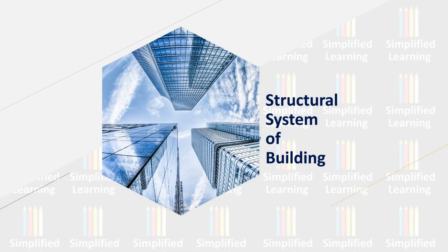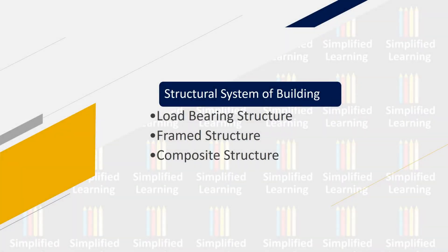If you want to define a building structurally, there are three ways. Either the building can be a load bearing structure, a frame structure, or a combination of both — that is, a load bearing structure as well as a frame structure. Load bearing system is a thing of the past, frame structure is the present and the future, and composite structure makes use of the best of both worlds.